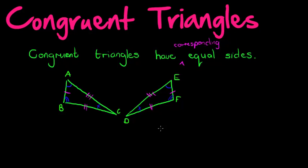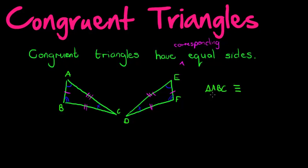To show that two things are congruent, I use three lines — almost like an equal sign but with three lines — that's the congruence symbol. If I want to say that triangle ABC is congruent to another triangle, what's very important is I have to keep the order in which they are congruent the same.